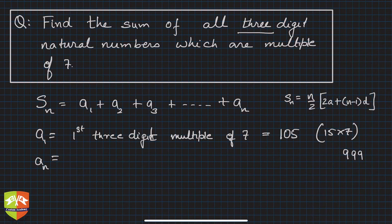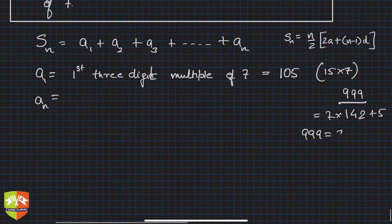If you divide this by seven you will get 142, remainder is 5. So 7 into 142 plus 5 is 999. That means if I remove 5, so 999 is equal to 7 into 142 plus 5.